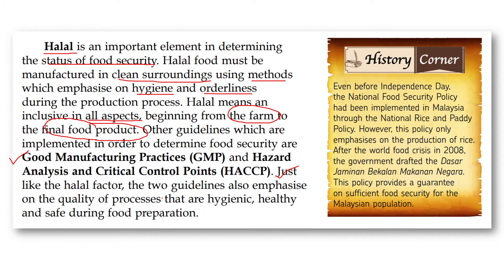Just like the halal factor, both GMP and HACCP guidelines also emphasize the quality of processes that are hygienic, healthy, and safe during food preparation.